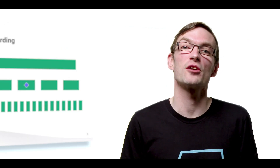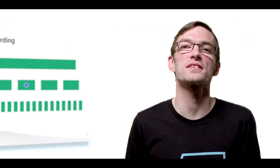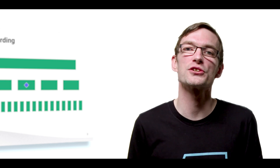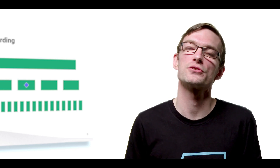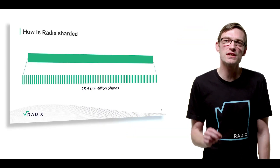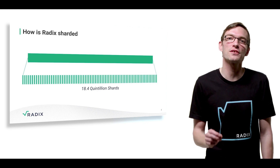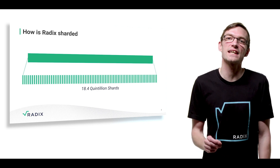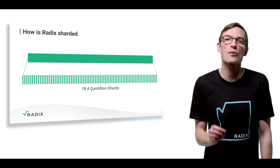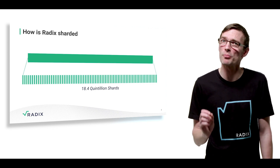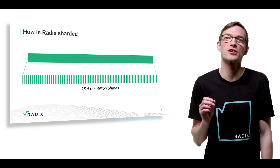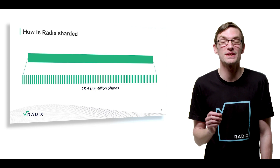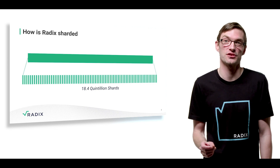Instead, Radix adopts a sharding policy which will never change no matter how large the ledger grows. First, we predefined a shard-friendly data structure, and second, set in stone how that data structure can be chopped up into incredibly small pieces — 18.4 quintillion shards to be exact.